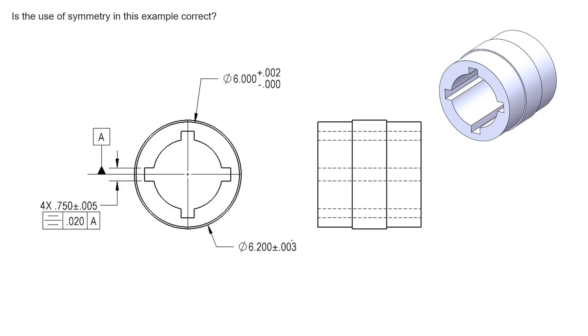Symmetry is a common symbol I see misused for a lot of reasons, and for those of you that are operating on the 2018 standard and you didn't realize it, symmetry is now gone. ASME got rid of concentricity and symmetry in the 2018 revision. In the 2009 revision or prior, you can still use it.